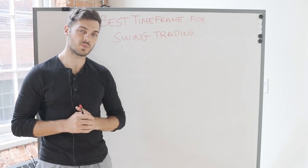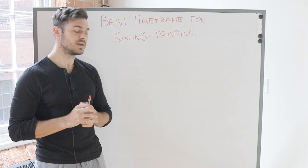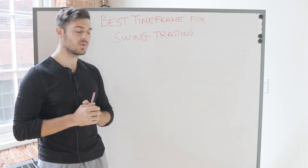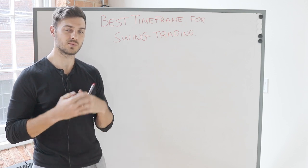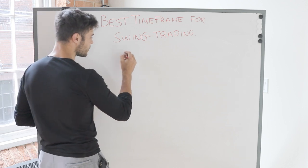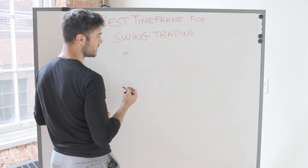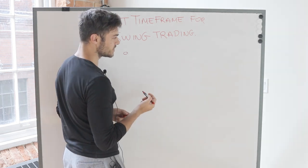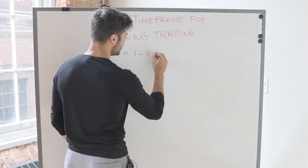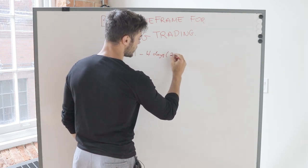So one of the questions we get quite often is: what time frame should I be using for swing trading? Now before we can answer that, what we want to identify first is what a swing trader actually is. A swing trader is basically a trader that is looking to hold positions anywhere between one to four days up to two weeks.